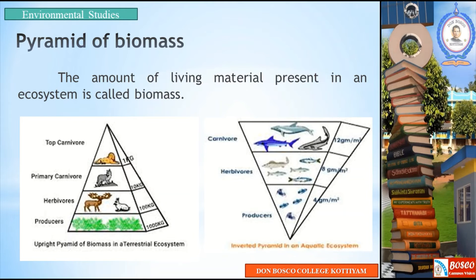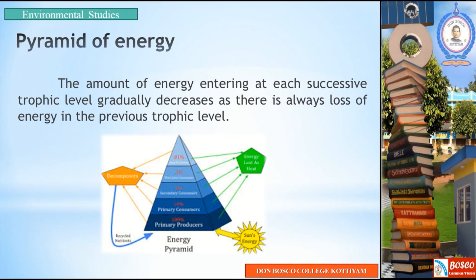The third type of ecological pyramid is the pyramid of energy. The amount of energy entering at each successive trophic level gradually decreases, as there is always a loss of energy at the previous trophic level.